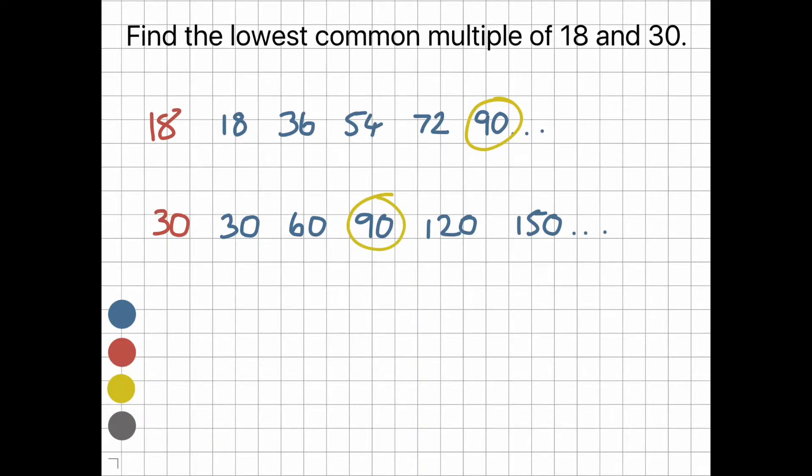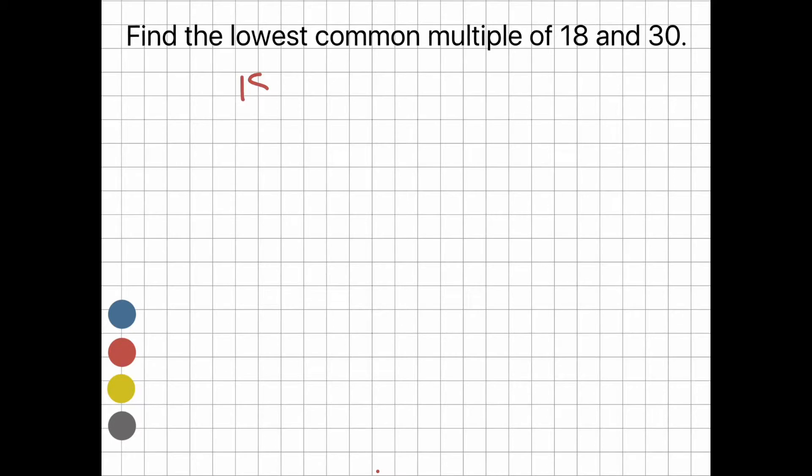The answer is 90. That's one way of finding the lowest common multiple, but it can be time consuming. So here's another way using prime factors. Let's take 18 first and find the prime factors or prime numbers.